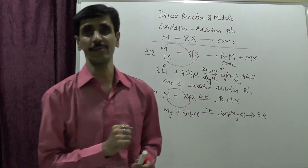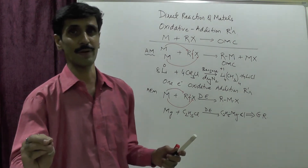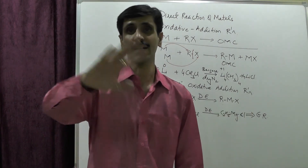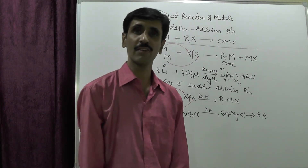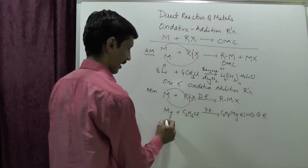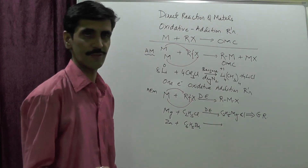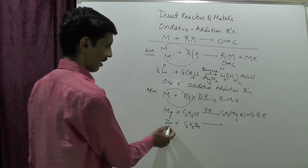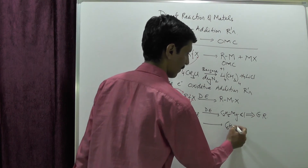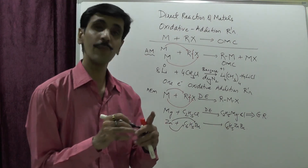It is not necessary that only alkali and alkaline earth metals form these compounds. An example with a D-block element: zinc, though not alkali or alkaline earth, also undergoes this reaction. Treating bromobenzene (C6H5Br) with zinc in dry ether — zinc has a valency of 2, so it forms a bond with carbon and with bromine — gives phenyl zinc bromide (C6H5ZnBr), another organometallic compound.